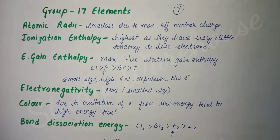For electronegativity, it is maximum for Group 17 elements - they are the most electronegative. Among them, fluorine is the most electronegative. The halogens, or Group 17 elements, exhibit different colors - each halogen has its own color. This color results due to the excitation of electrons from low energy level to high energy level, similar to d-d transitions. Due to excitation, they exhibit color - they emit the opposite color of what they absorb.